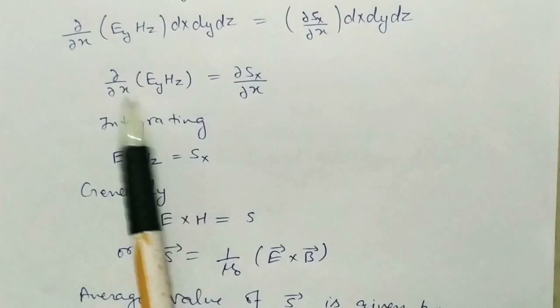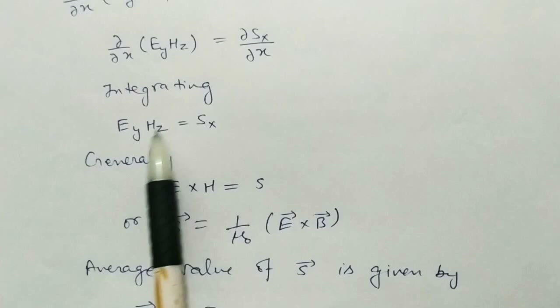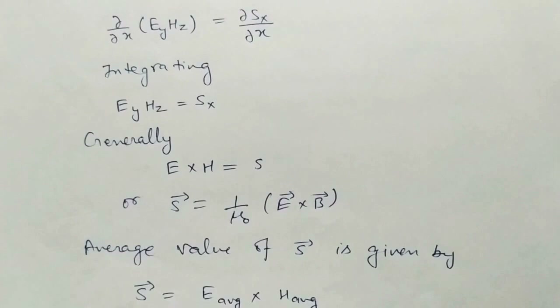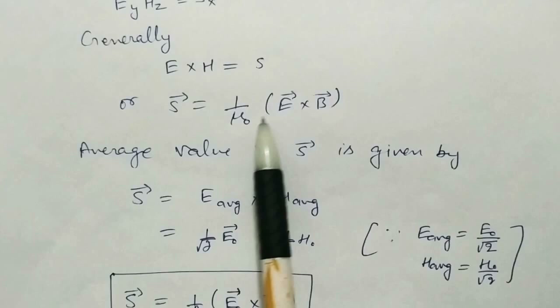Now integrating, since integration and differentiation cancel each other, we get E_y · H_z = S_x. Writing the general equation in terms of x, y, z coordinates: E cross H equals S. So S, the Poynting vector, equals E cross H. Writing in terms of B, using the relation B equals mu-naught H, we get S equals 1 by mu-naught times E cross B.